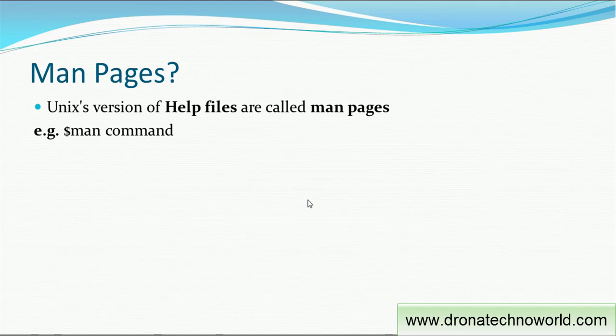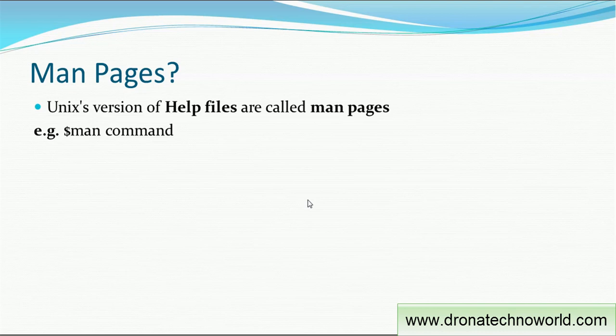UNIX versions of help files are called man pages. For example, if you are searching for a particular word or definition, what do you do? We normally go to Google or any search engine and search that word to get the meaning, or you can go to the wiki page. On the same line, UNIX maintains man pages. Man is a very straightforward command — you type M-A-N and give the command name after that.